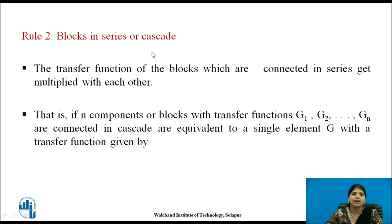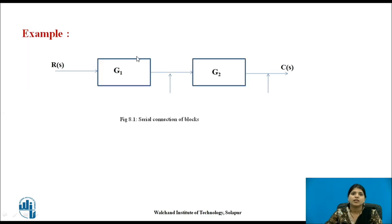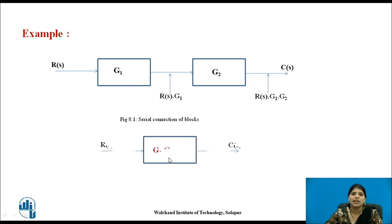Rule 2 covers blocks in series or cascade. The transfer functions of blocks connected in series are multiplied with each other. For n blocks with transfer functions G1 through Gn, take their product. For example, R(S) through G1 gives R(S)·G1, and through G2 gives R(S)·G1·G2. After reduction, since G1 and G2 are in series, we directly take the product and get output R(S)·G1·G2.